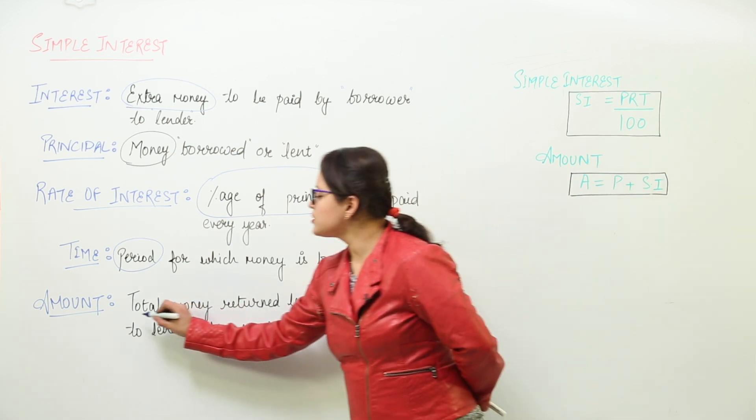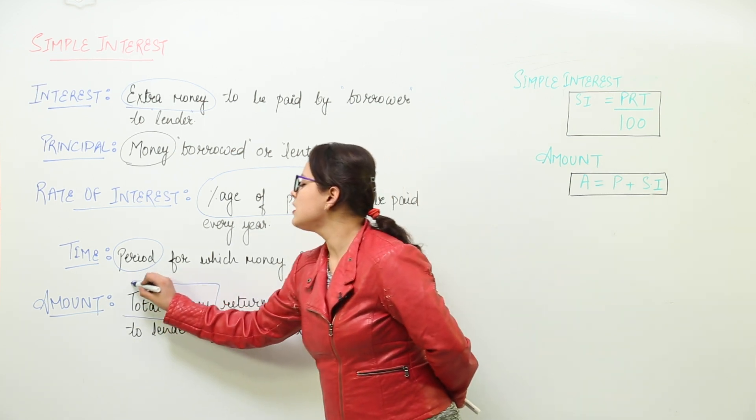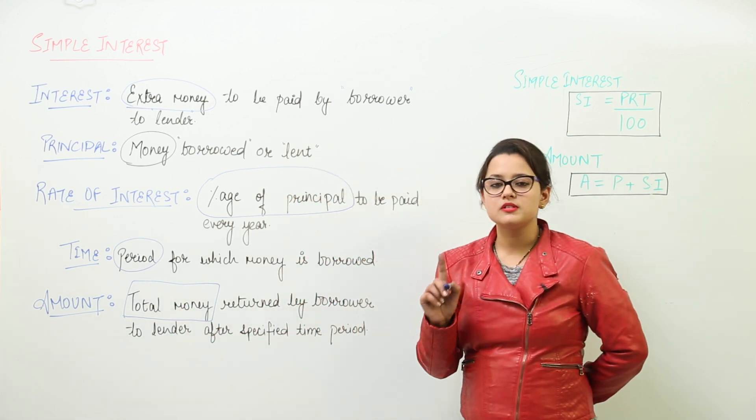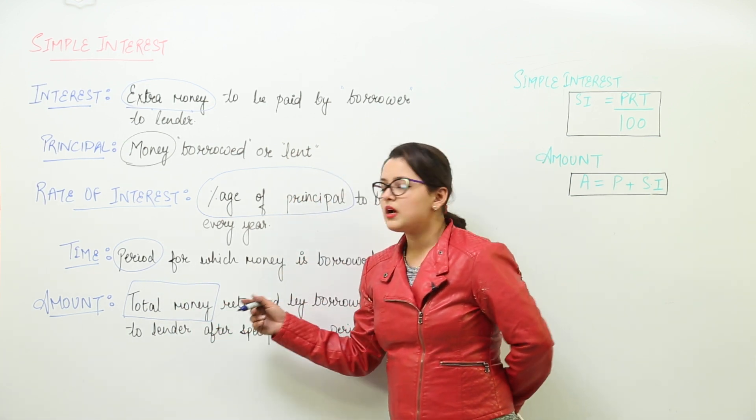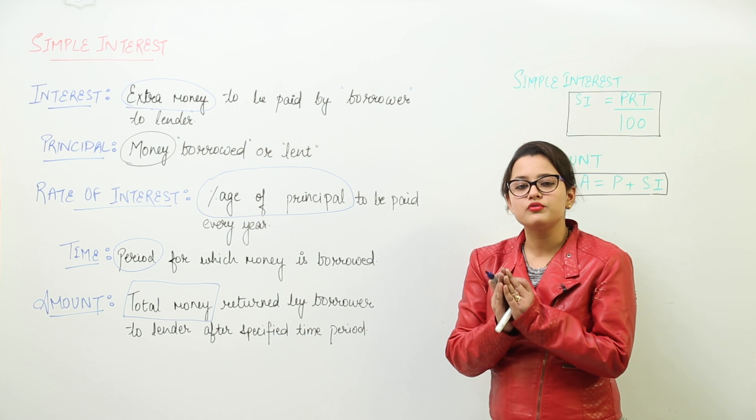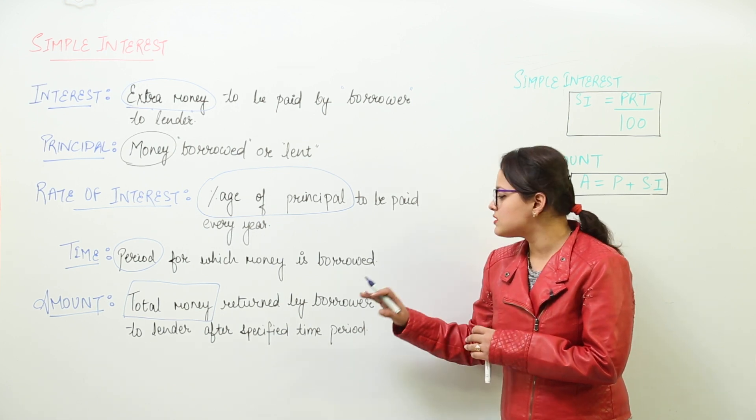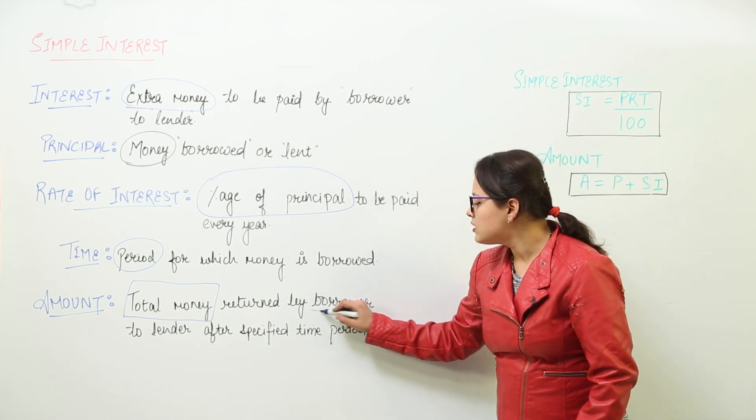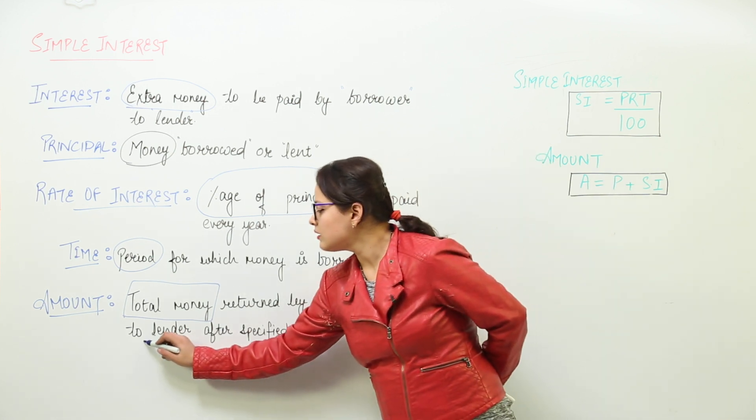Next is the amount. Now, amount is the total money. Please pay attention. Do not get confused in the principal, interest, and amount. Amount is the total amount of money that is to be returned by the borrower to the lender. When? After the specified time period.